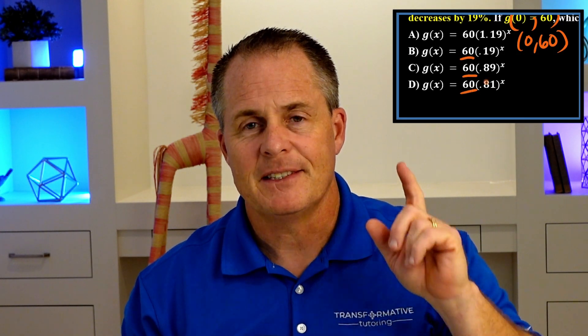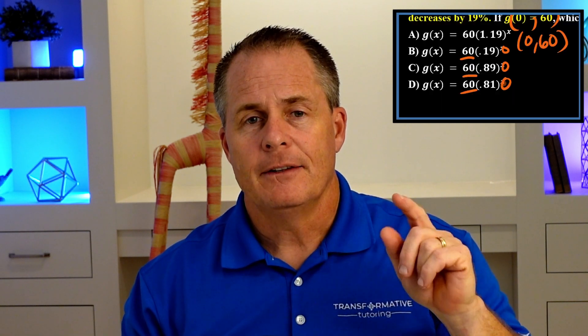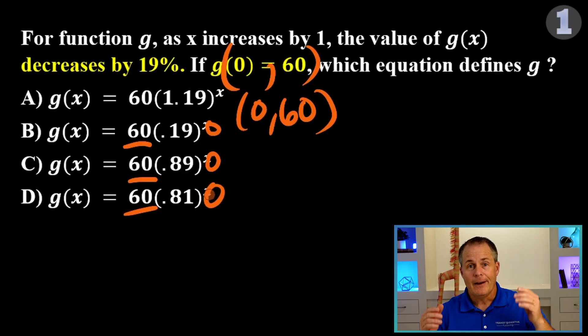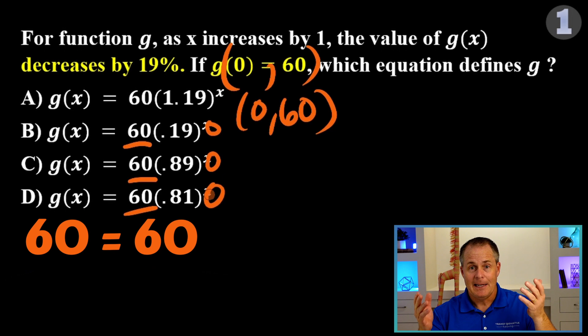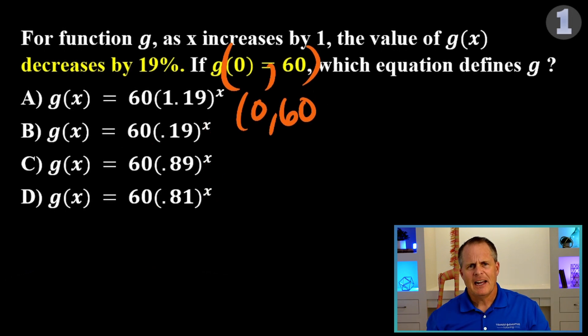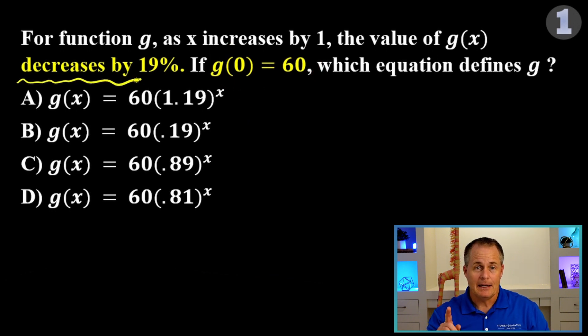But, we have to check each equation. Can you see what's going to happen when you put 0 in for x in every equation? They all turn into 60 equals 60. Let's try to figure out what to do with the fact that the value of g(x) is decreasing by 19%.